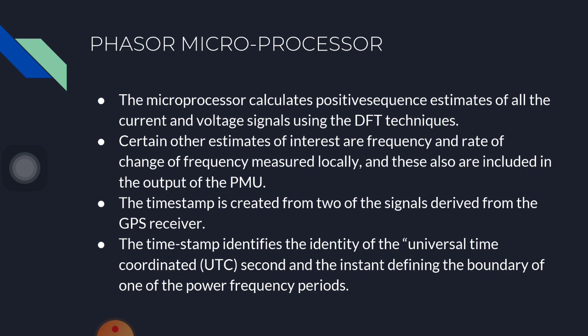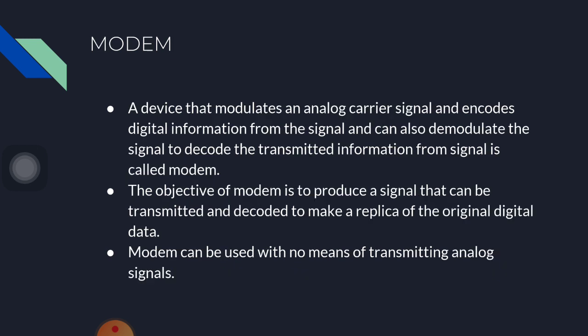Phasor microprocessor: the microprocessor calculates positive sequence estimates of all the current and voltage signals using DFT techniques. Certain other estimates of interest — frequency and rate of change of frequency — are measured locally and are also included. The output of the PMU: the timestamp is created from signals derived from the GPS receiver. The timestamp identifies the Universal Time Coordinator (UTC) second and the instant defining the boundary of one of the power frequency periods.